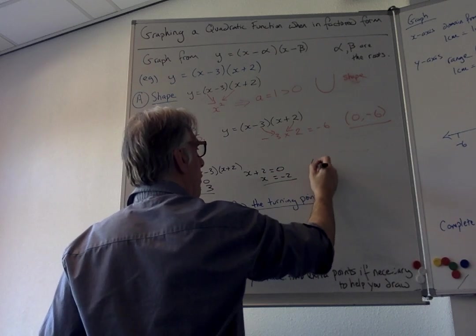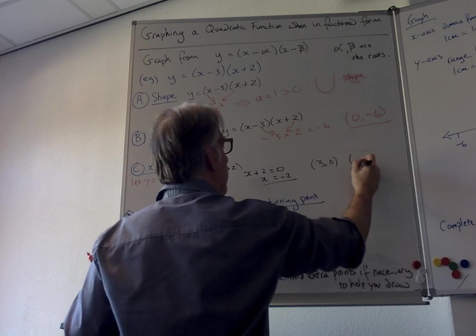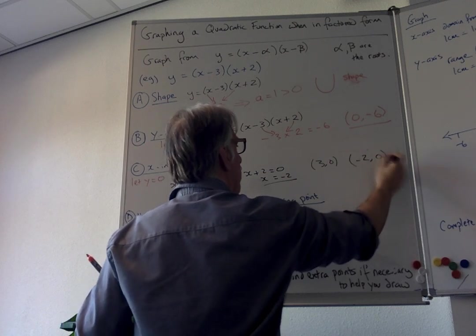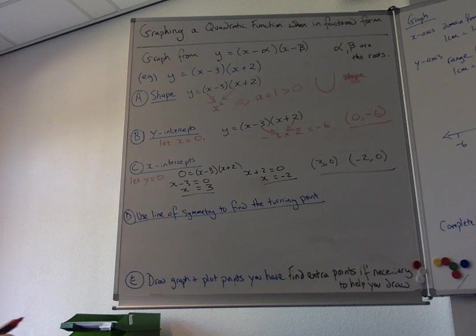So the roots are at 3, 0 and the other one is at minus 2, 0. We've got those points to plot as well. Now we're starting to build up a picture.